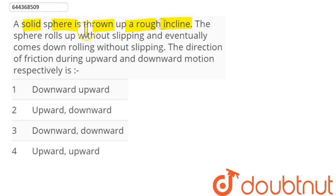thrown up a rough incline. The sphere rolls up without slipping and eventually comes down rolling without slipping. The direction of friction during upward and downward motion respectively is: